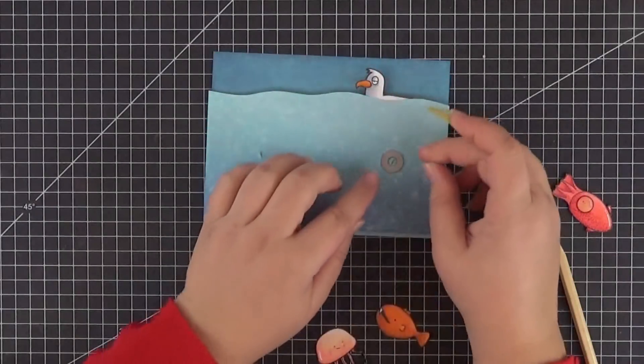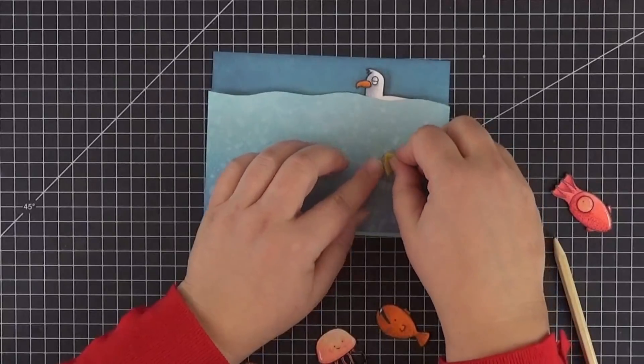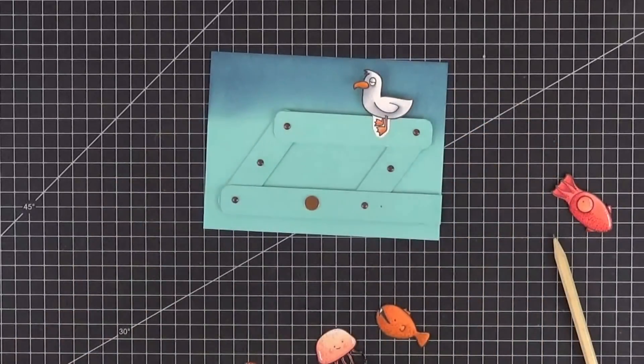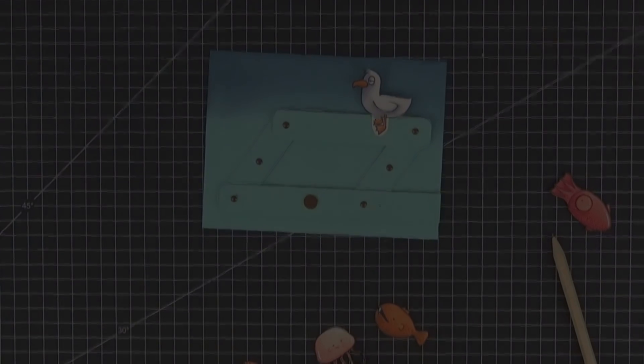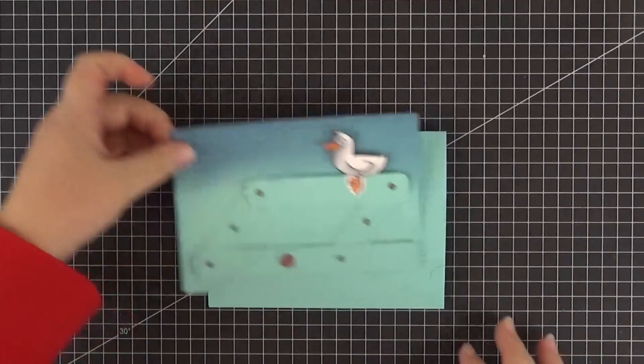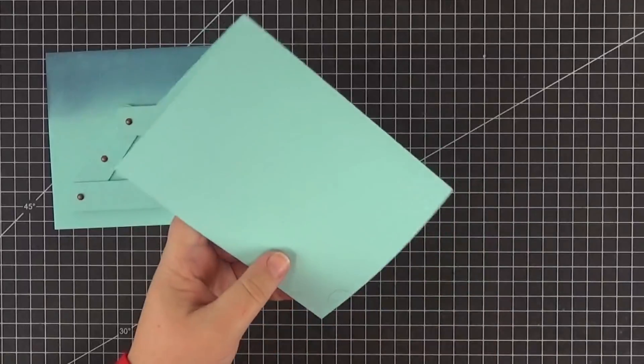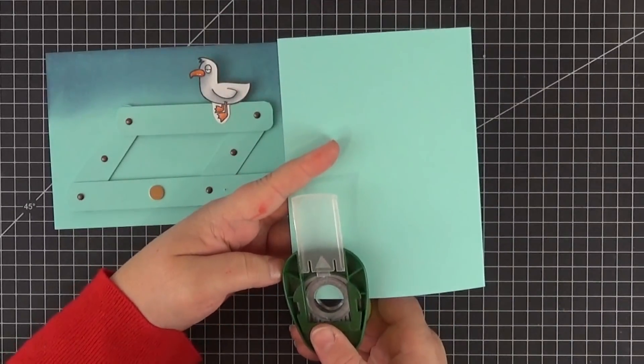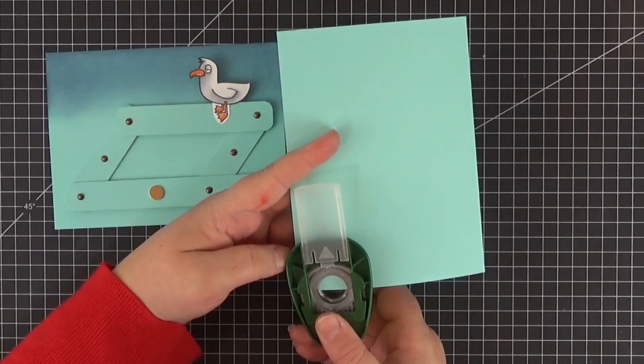Then we can use a small circle die or a craft knife to cut the holes that need to be a little bit larger than the brad but smaller than the moving element. I decided that it would be a good idea to punch a semicircle in the front of the card base so that it would be easier to grab the pull strip.